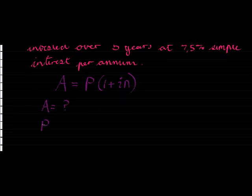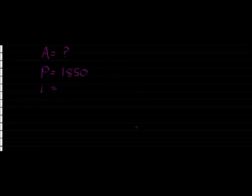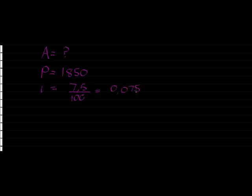When we get to compound interest, you'll see instead of multiplying, we're going to have an exponent. But here we simply put into our formula. Do we have the principal value? Yes. Originally we invested a thousand eight hundred and fifty. We know the interest. Now here it is very important. We never use percentage in a calculation. Percentage means divide by a hundred. So seven comma five divided by a hundred means the comma shifts two places to the left: zero comma zero seven five. That is my interest value for the formula.